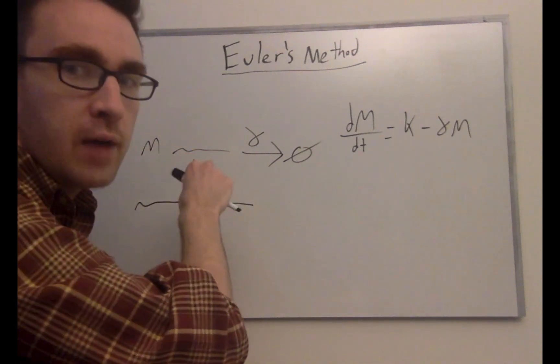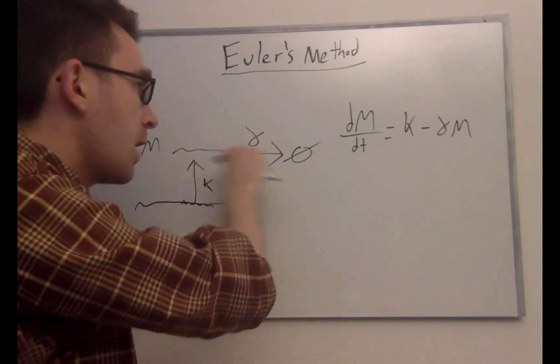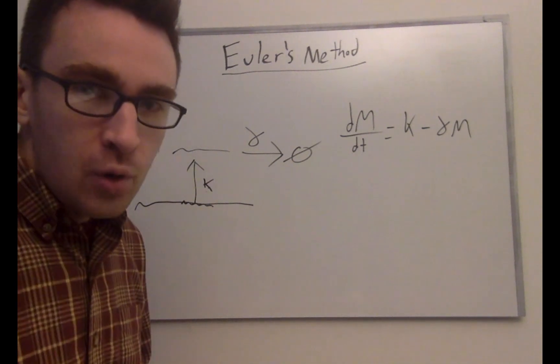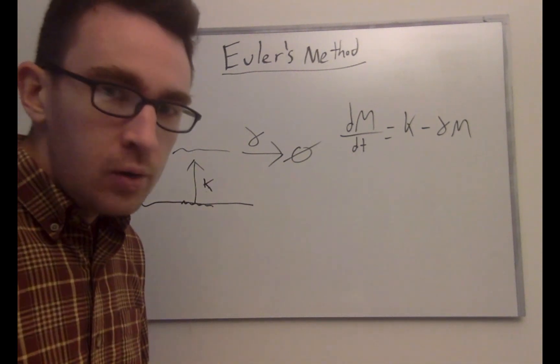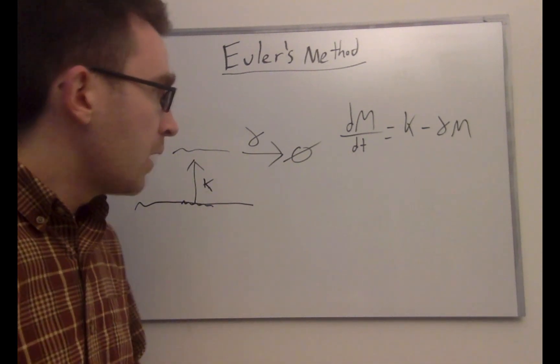Hopefully you guys are following this. We just have our production term — it's produced with a rate K. And then it degrades with rate gamma, multiplied by M, because the decay depends on the level of M. If we don't have any M, then there can't be any decay of M happening. Very simple model.